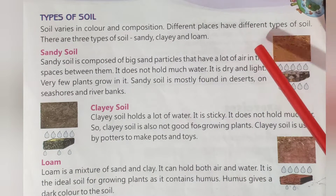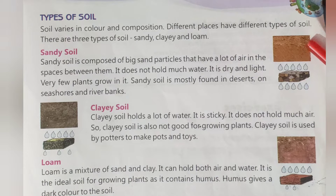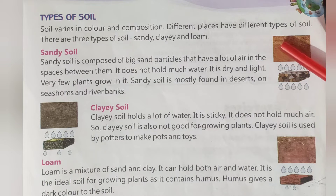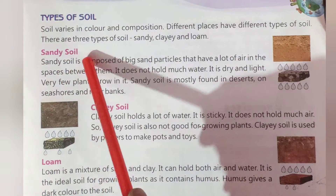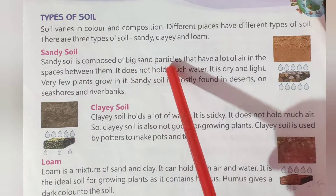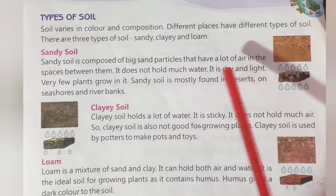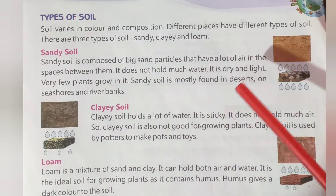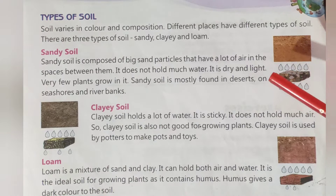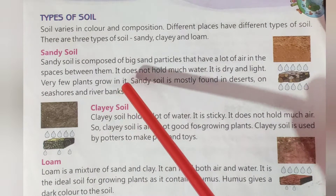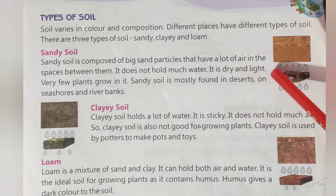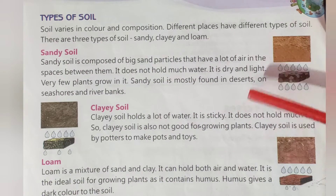Sandy soil is composed of big sand particles that have a lot of air space between them. It can easily allow air through. Sandy soil does not hold much water. It is dry and light.